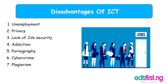Now for the disadvantages of ICT. First is unemployment — even though ICT is relevant, it has created unemployment because the use of machines has made human roles in some sectors irrelevant. For example, banks no longer need as many tellers or cashiers because we can use ATMs to withdraw money. Other disadvantages include lack of job security, lack of privacy — since data online can be accessed by anyone — addiction to phones and the internet, exposure to pornography, cybercrime, and plagiarism.